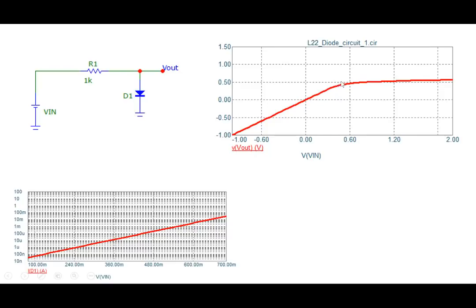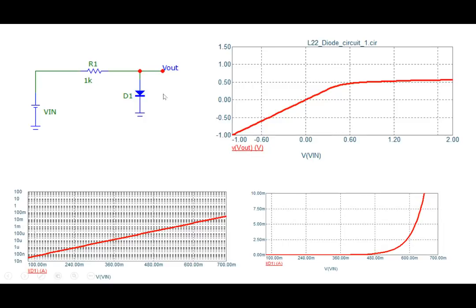Until we reach about 0.6 or 0.7V, conduction through the diode becomes significant, and now the bottleneck to current flow becomes the resistor R1. For example, at 5 milliamperes flowing through the circuit, the drop across R1 is 5 volts. At 5 milliamperes, the drop across the diode is maybe 0.62V, so the total voltage is 5.62V, with 5V dropping across R1 and 0.62V across the diode.